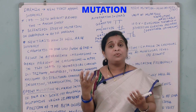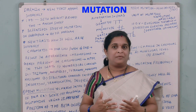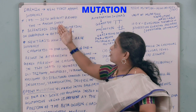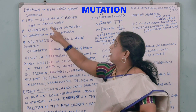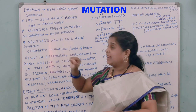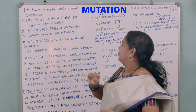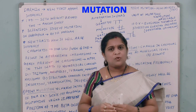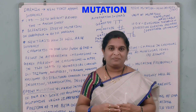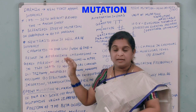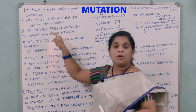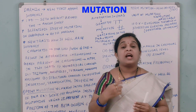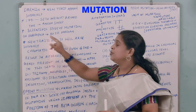So here, what happens is new traits appear suddenly, which is correct and proved according to Darwin, and also proved by Seth Wright with the Ancon sheep in 1791. The scientific study of mutation on Drosophila — commonly known as the fruit fly — was done by T.R. Morgan, who worked on Drosophila to study mutation and how it implies on fruit flies.